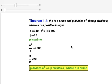This model illustrates the theorem. If p is a prime number and p divides a squared, then p divides a, where a is a positive integer. Here, a equals 340, a squared equals 115,600, and p equals 17 as a prime number.